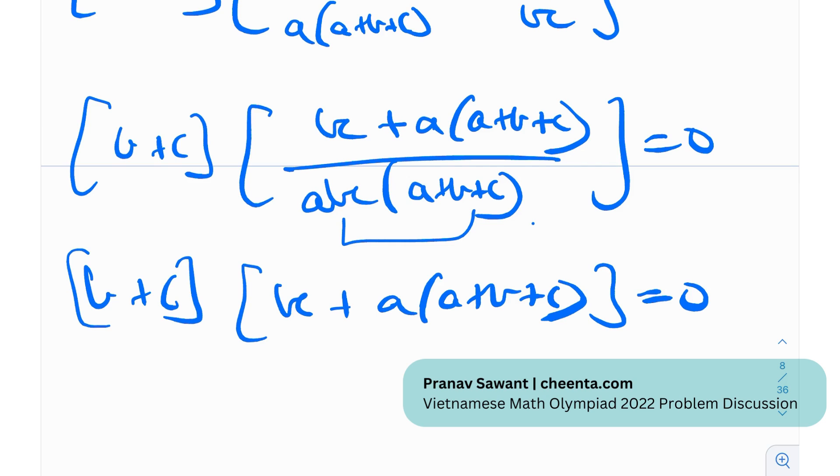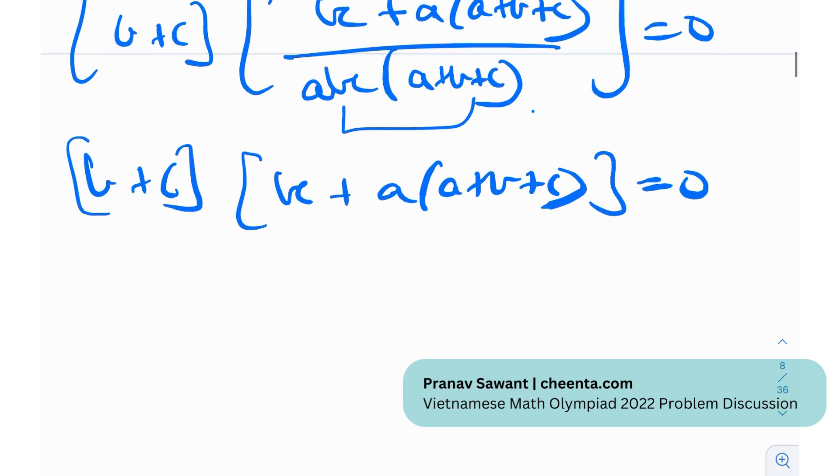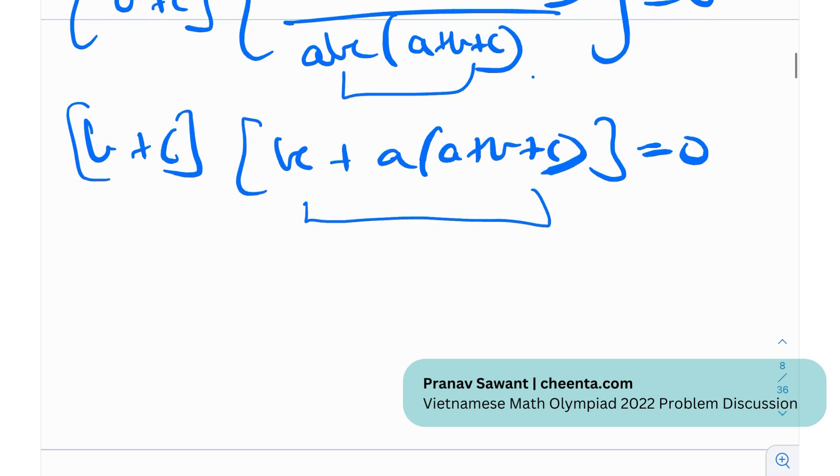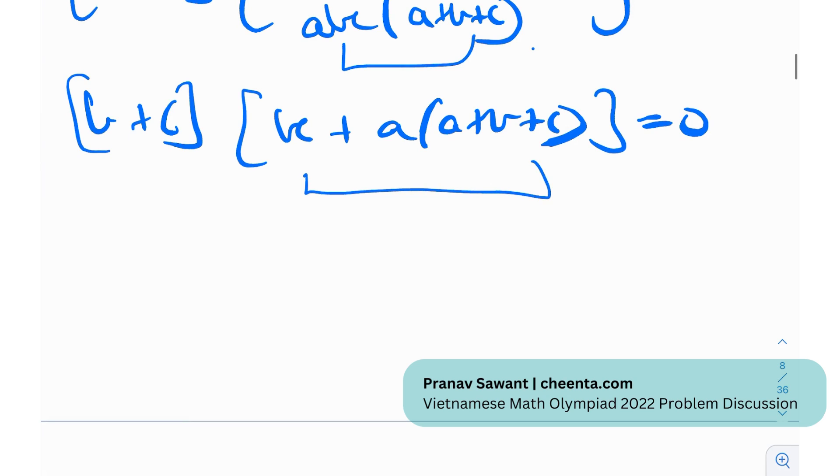So, yeah. Now that this is done, now how do we proceed after this? Well, you see, if we can somehow manage to factorize this, it will be good. Now from here, you know, what might come across your mind is just take two cases, right? Case 1 where b+c equals 0 and case 2 where this other quantity is 0. But if you actually persevere a little bit longer, you'll actually realize that there exists a neat factorization for this as well.